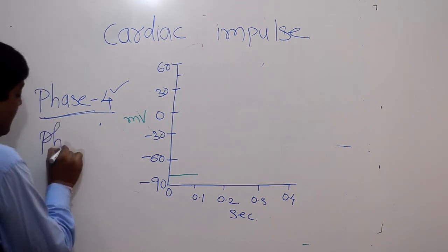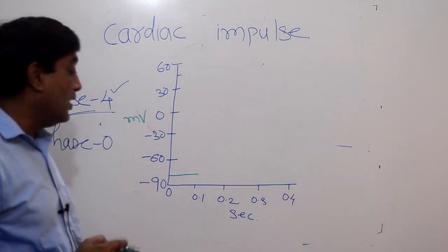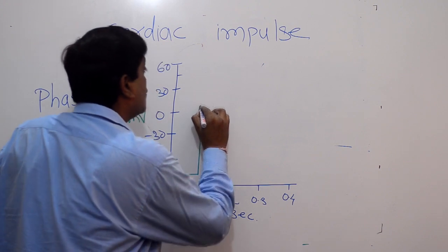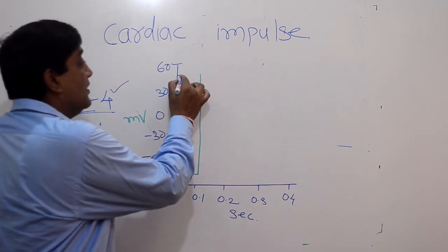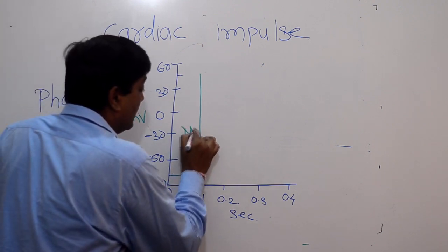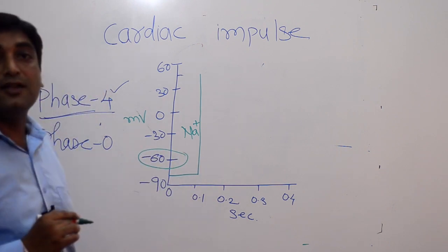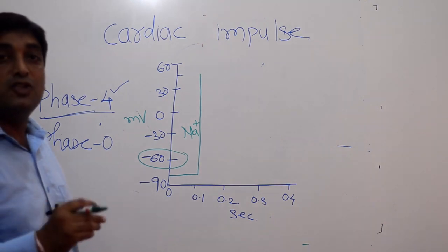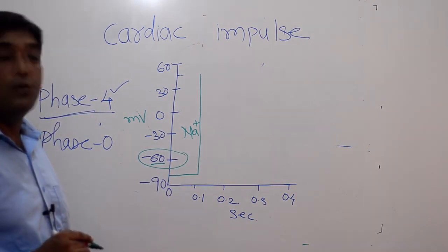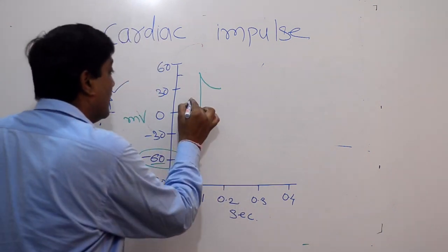The next phase is phase 0, which we call rapid depolarization — the action potential upstroke. It is activated by transient sodium ion currents which will be peaking at plus 45 millivolts. This is because sodium ion channels open up, allowing sodium ions to enter the cell. This will activate only when a cell reaches the critical firing threshold, that is minus 60 millivolts — the threshold potential of the cardiac cell. Until the voltage reaches minus 60, sodium ion channels are not going to open. Once it reaches the peak, it gets inactivated and commences the next stage.